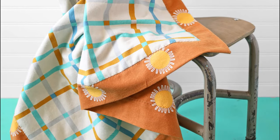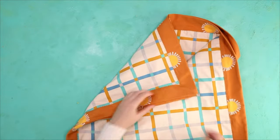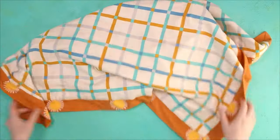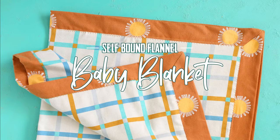Hello everyone! Today I'm going to show you how to make a self-bound flannel baby blanket. I love this project because it has a cute border with mitered corners that go around the edge, but it's actually just made from two squares of fabric. It's so cool how it magically forms a border. Let me show you how to make it.